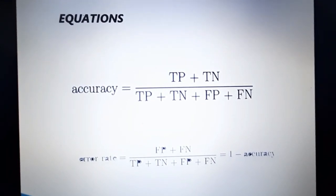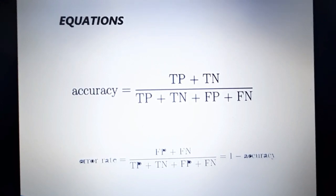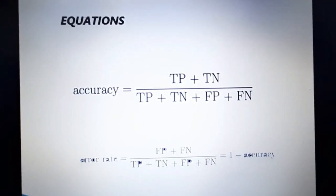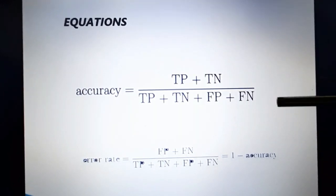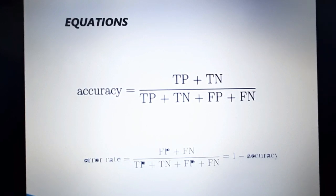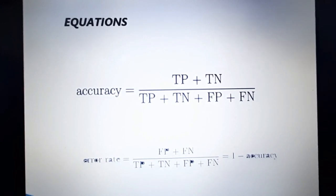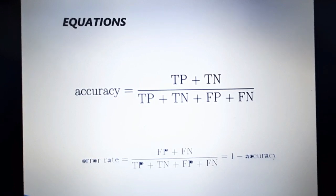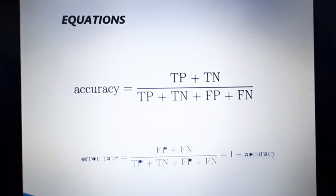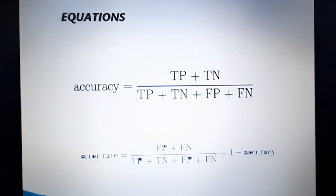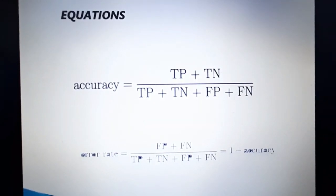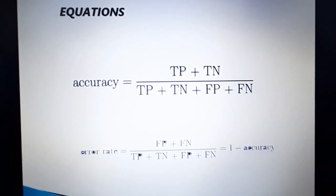The model's accuracy equation is: accuracy equals true positive plus true negative divided by all the predictions. Next, error rate is equal to 1 minus accuracy. So error rate equals 1 minus accuracy.